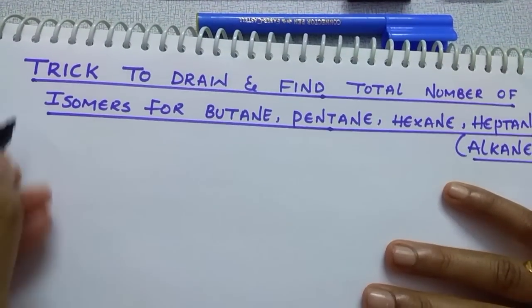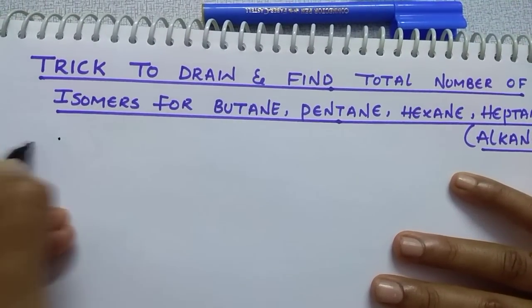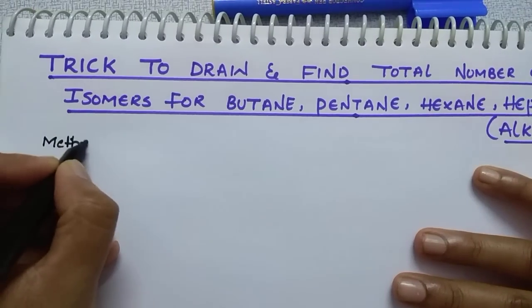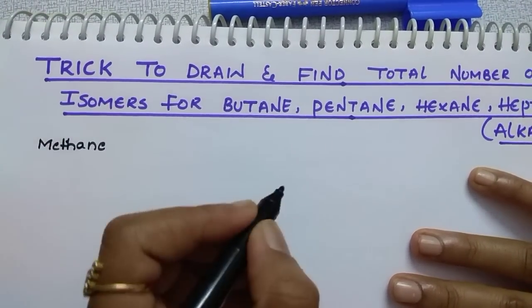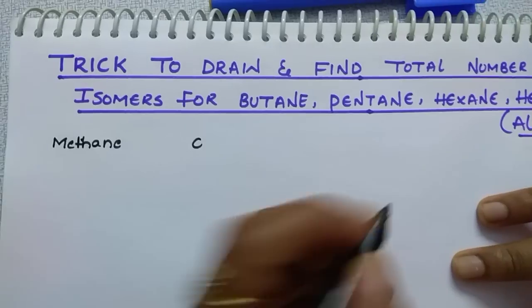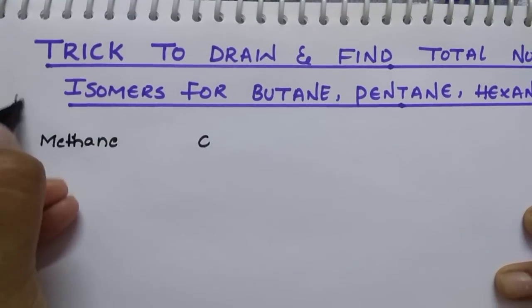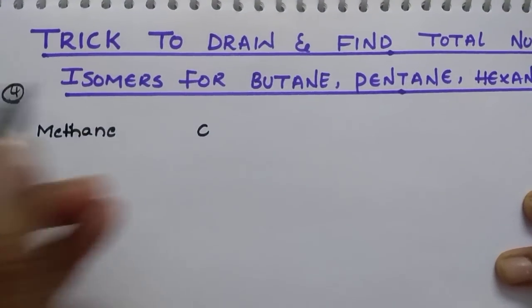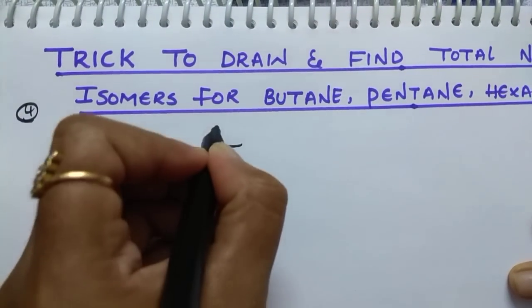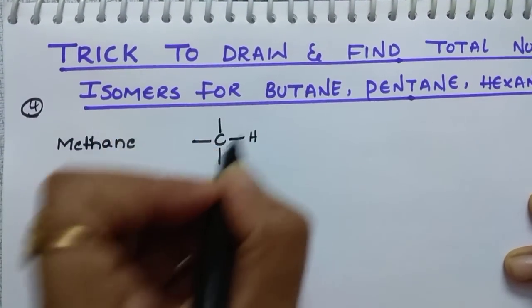Let me teach you how to draw. First, one carbon: the one-carbon alkane is methane, which consists of one carbon. Carbon valency is 4, so what you have to do is just put 4 bonds and place 4 hydrogens here.